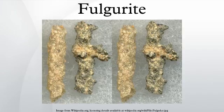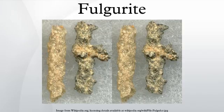Fulgurites are classified generically as a variety of the mineraloid lechatelierite, although their absolute chemical composition is dependent on the physical and chemical properties of target material affected by the discharge of cloud-ground lightning. They are commonly hollow and/or branching assemblages of glassy, protocrystalline, and heterogeneously microcrystalline tubes, crusts, slags, vesicular masses, and clusters of refractory materials. Colloquially, they have been referred to as petrified lightning.